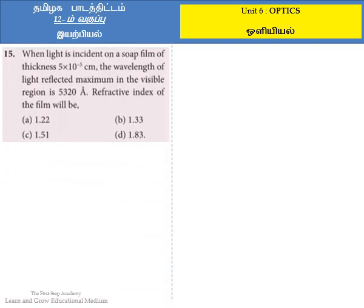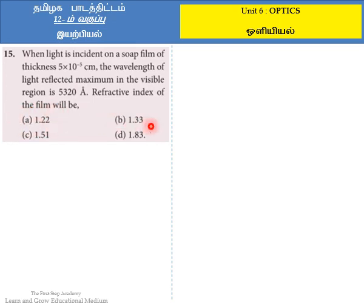The question is: when light is incident on a soap film of thickness 5 × 10⁻⁵ cm, the wavelength of light reflected maximum in the visible region is 5,320 angstrom units. The refractive index of the film will be — option A: 1.22, option B: 1.33, option C: 1.51, option D: 1.83.